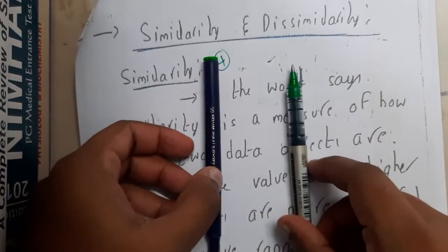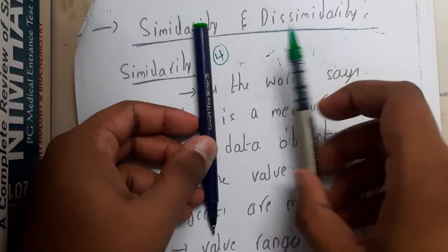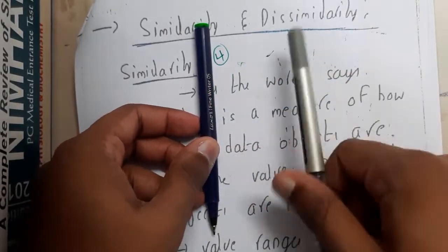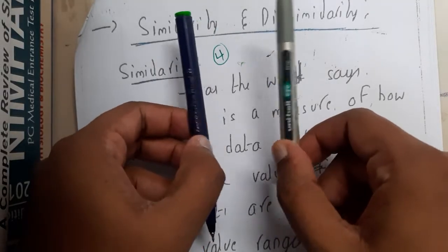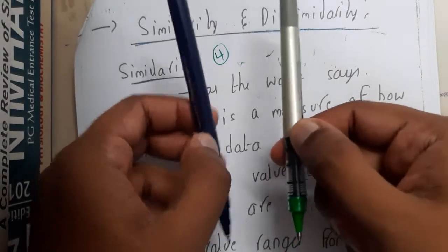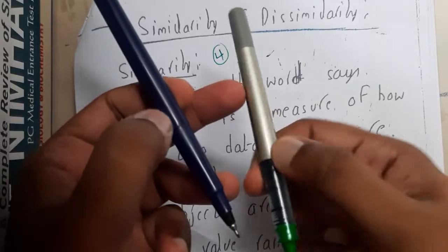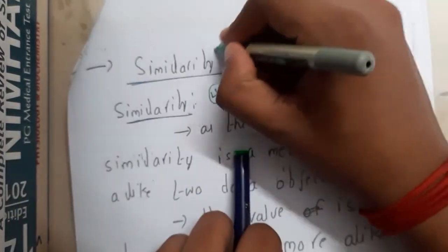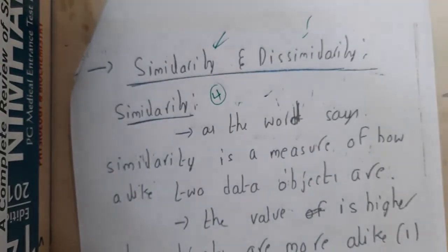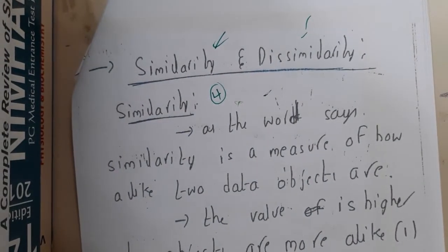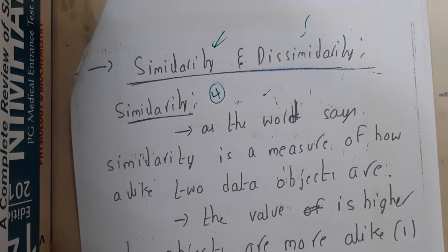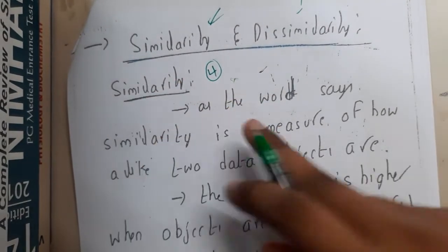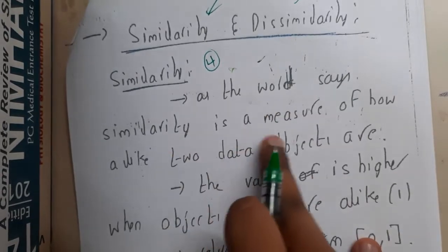If you compare these two other pens, both are green in color, but one is a gel pen and the other is a marker pen or sketch pen. These two are having more dissimilarities — one is thin and one is thick, one is blue and one is white or golden in color. This concept is nothing but similarity and dissimilarity. In this topic we will be discussing about the similarity and dissimilarity of data.